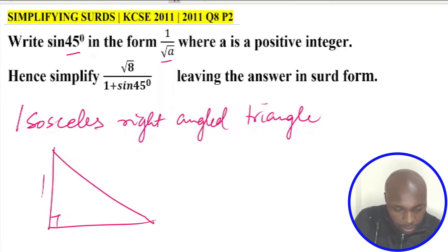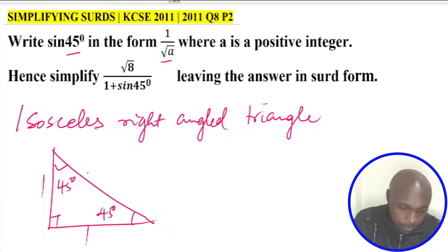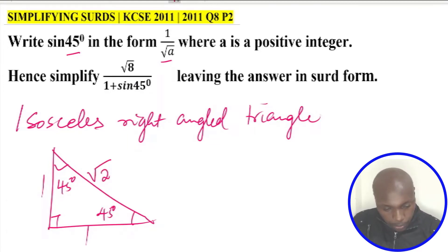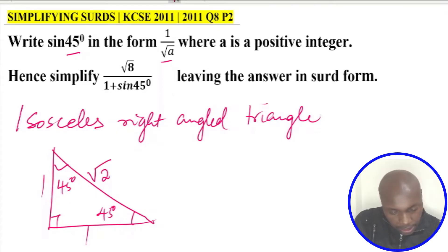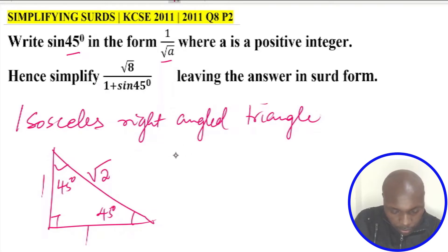The isosceles right-angled triangle has sides 1 and 1, with both base angles being 45 degrees. The hypotenuse is root of 2. This is the triangle that will help us obtain sine of 45 in surd form. We can use either of the 45-degree angles.